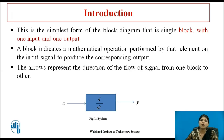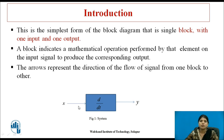This is the simplest form of block diagram. Here it is a single block with one input x and one output y. A mathematical operation is performed by that system and output is produced according to the input. The arrow indicates the direction of flow of signal from one block to another block.